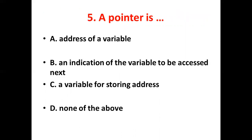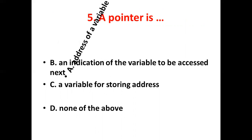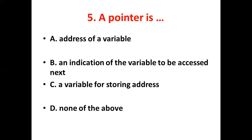Fifth bit. A pointer is dash. Option A: Address of a variable. Option B: An indication of the variable to be accessed next. Option C: A variable for storing address. Option D: None of the above. Answer: Option A, address of a variable.